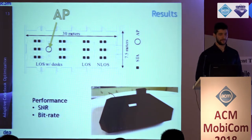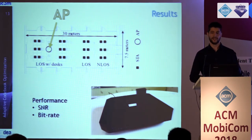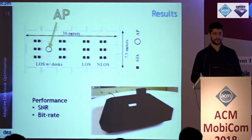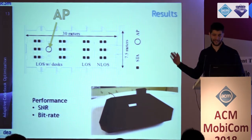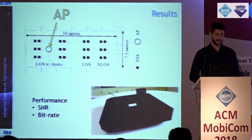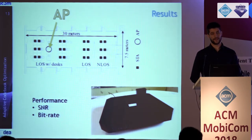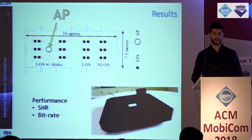Now it's time to see how the method performs in the real world. We implemented everything on the Talon 7200AD devices and tested the algorithm in an open office area scenario. The access point was mounted in the ceiling in a 3D scenario, while the stations were on desks that were moved around. We have three different areas: line-of-sight with desks, line-of-sight without a desk, and non-line-of-sight behind a wall. We measure performance in terms of SNR and its corresponding bit rate.